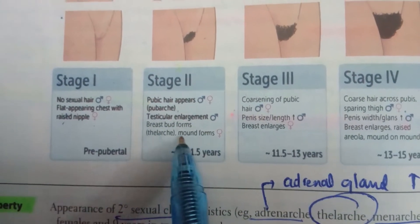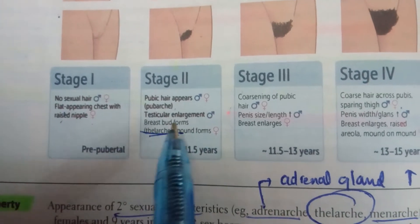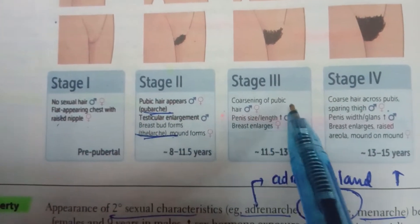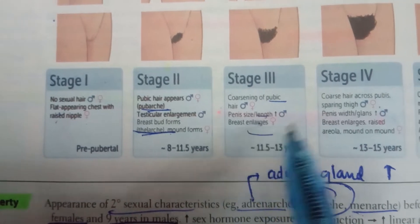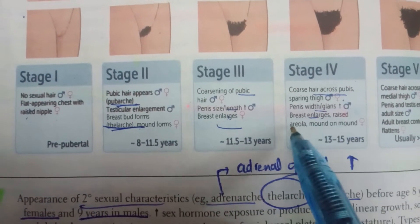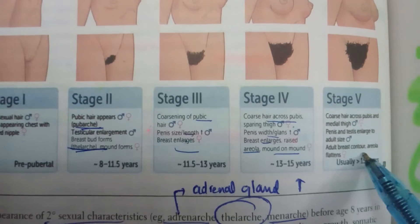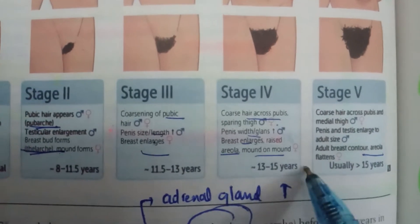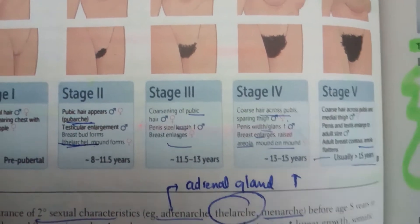Continuing Tanner stages: stage two has pubarche and thelarche. Stage three shows coarsening of pubic hair with breast and penis enlargement. Stage four has breast areola forming a mound. Stage five shows adult breast contour with flat areola. All stages are usually completed by 15 years of age.